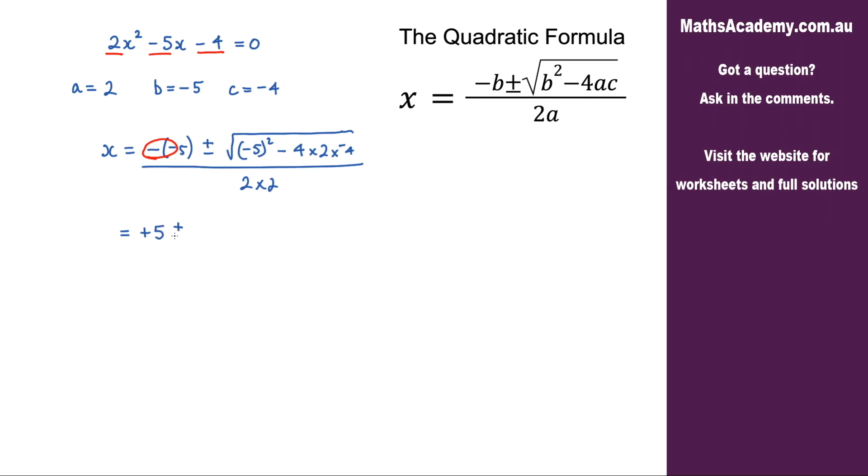We've got plus or minus, and we've got the square root of negative 5 squared which is 25. We have this negative here and this one that gives a positive, and we've got 4 times 4 is 16, times 2 is 32. So 32, that is all over 4. 2 multiplied by 2 is 4.